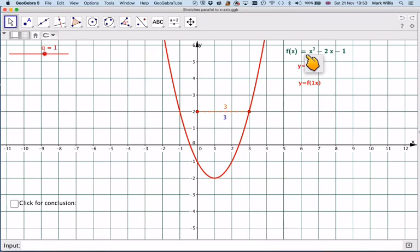Here we have the function f(x) = x² - 2x - 1, and I want to do f(qx). Obviously at the moment it is 1, so if I wanted to do 2x, that means instead of x I'd have to put 2x here and 2x here.